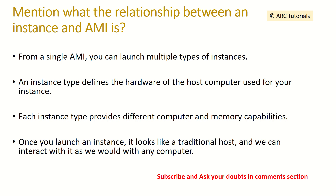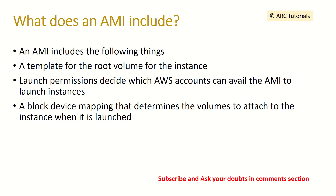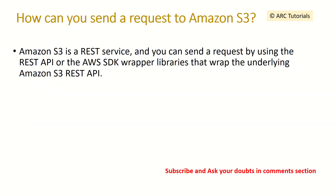What does AMI include? An AMI includes the following: a template for the root volume of the instance, launch permissions that decide which AWS accounts can use the AMI, and a block device mapping that determines the volumes attached to that instance. These are the key things included in any AMI.